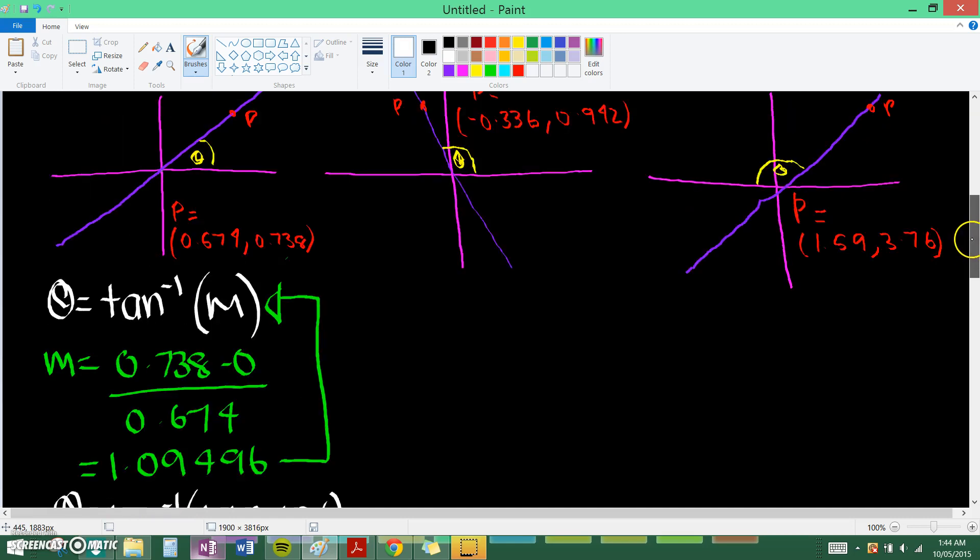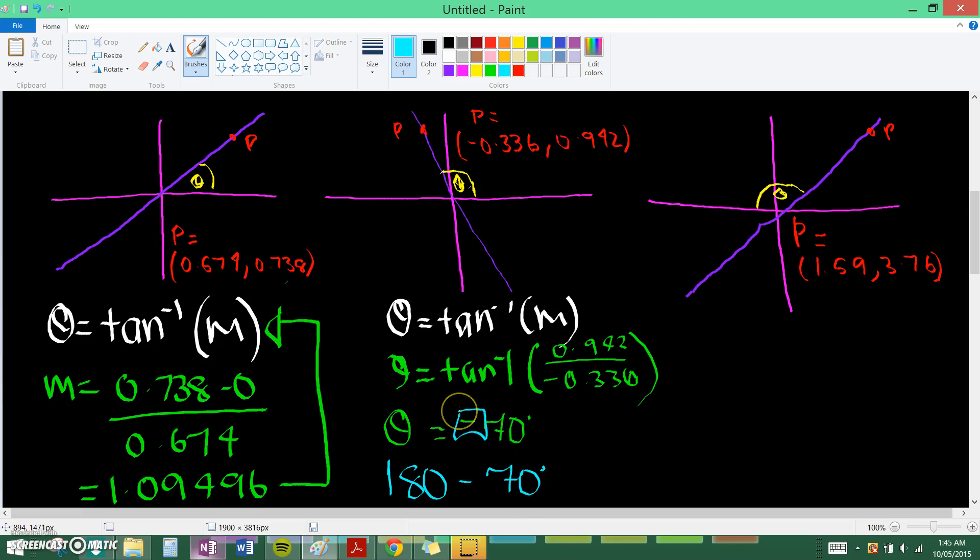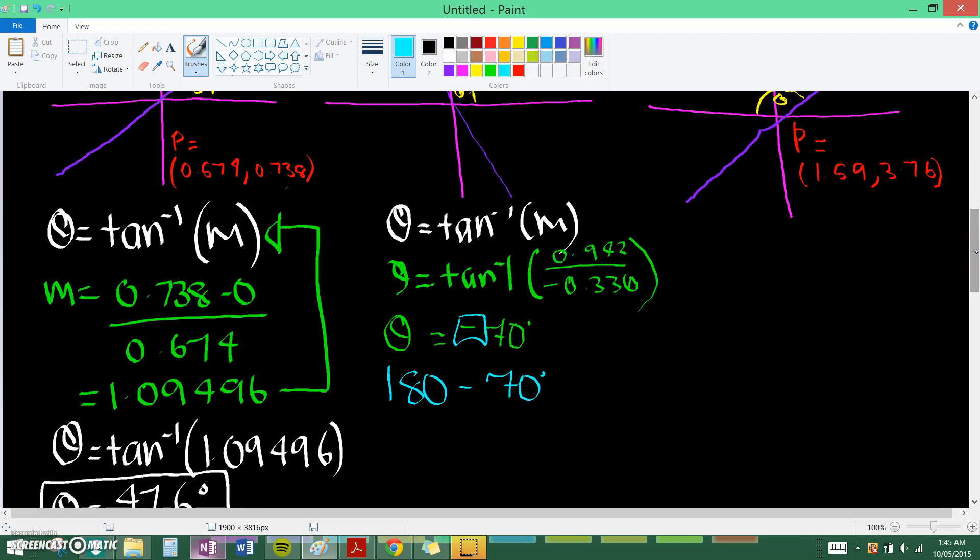Now let's go on and do the next question. So this one, we can tell that the gradient is negative already. And this is above the 90 degrees. So theta equals tan negative 1, m. And then substitute the m in. So 0.0942 divided by negative 0.336. And you plug that whole thing into your calculator. And it should pop out with negative 70 degrees. Now that is not theta. Theta would be 180 minus 70 degrees. That's why there's a minus there. And that equals 110 degrees.